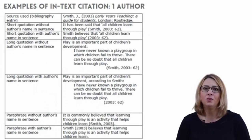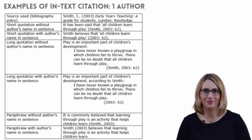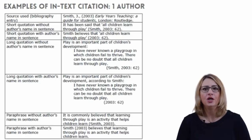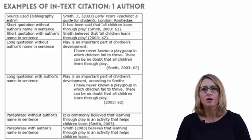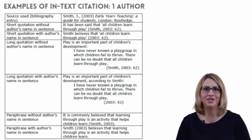If you would like to cite the work of one author, these are the different ways that it can be done. The in-text citation usually takes the form of the author's surname, followed by a comma and then the year the work was published, then a colon and a page number.